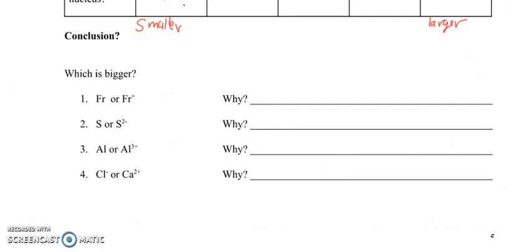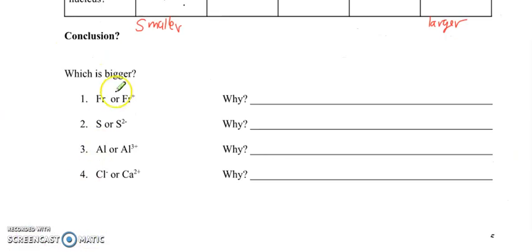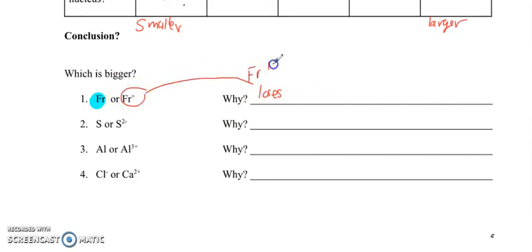Let's try some of these on our own. Look at francium versus francium+. Francium is at the bottom of the periodic table with one valence electron — it wants to lose it and become like radon. When francium loses that one valence electron and becomes Fr1+, which one is bigger? Francium will be bigger, because francium 1+ loses the 7s shell, so the ion is smaller.